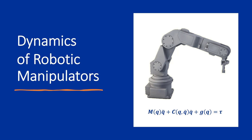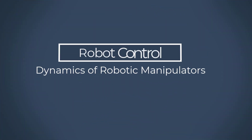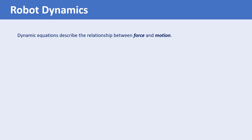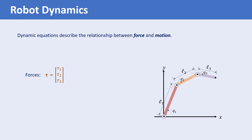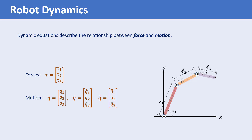In this lecture, we explain the dynamic model of an n-degree-of-freedom robot manipulator. Dynamic equations describe the relationship between force and motion and are represented by ordinary differential equations. The forces and torques which are applied to the joints by the actuators are denoted by tau. These forces make the joint angles change. The position, velocity, and acceleration of the joints are shown by the vectors q, q-dot, and q-double-dot.